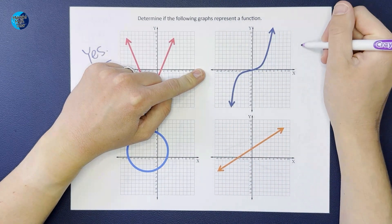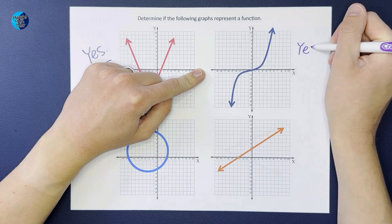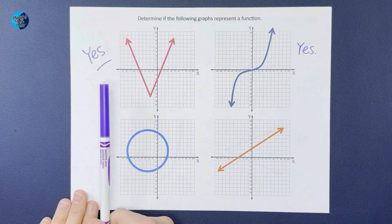I never cross two points at once, so yes this one is a function.